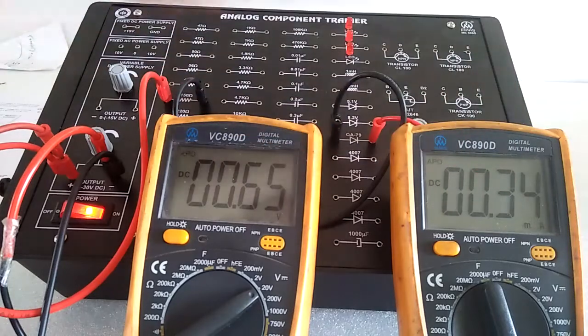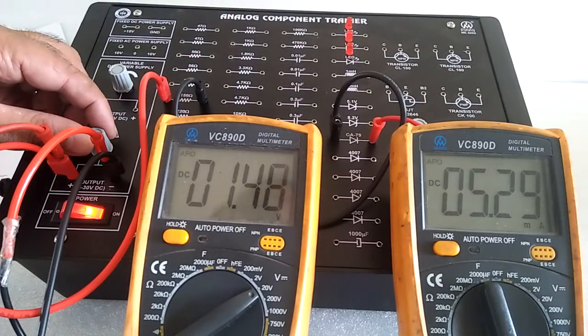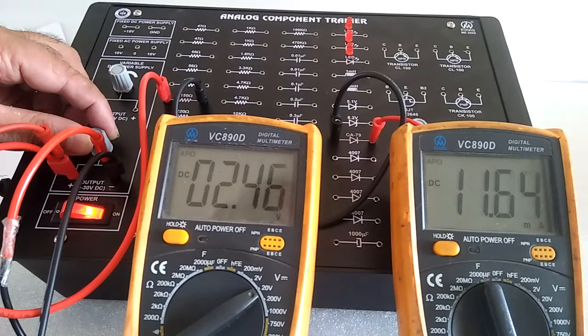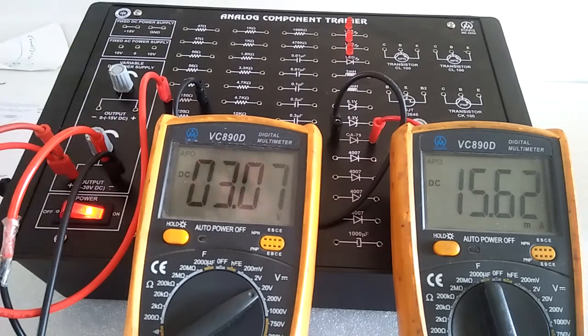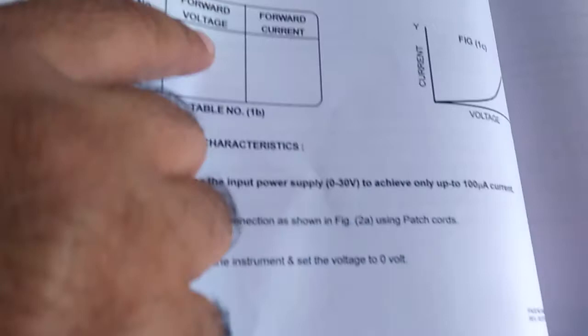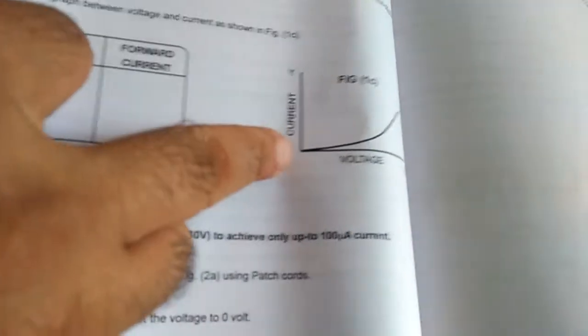Around 0.7 we get the current. Note down the voltage and current value and plot the graph. Note down the voltage and current in the table and make the graph.